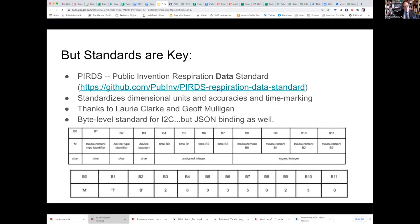I'm going to talk about a project called PURDS, the Public Invention Respiration Data Standard. This is a literal standard which has byte level, C level, and JSON level bindings.